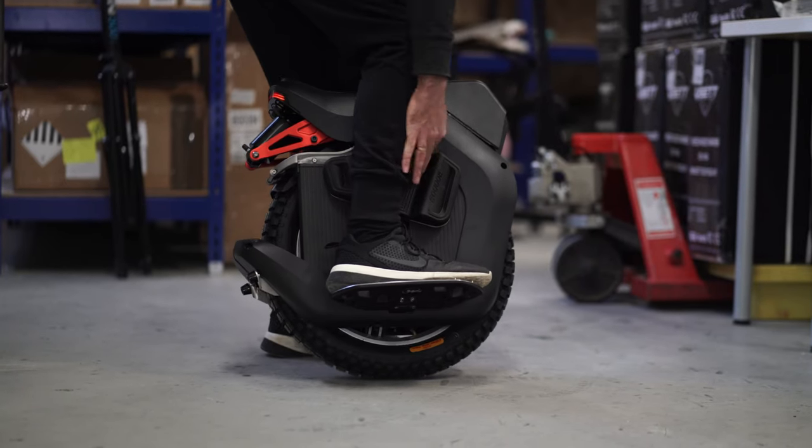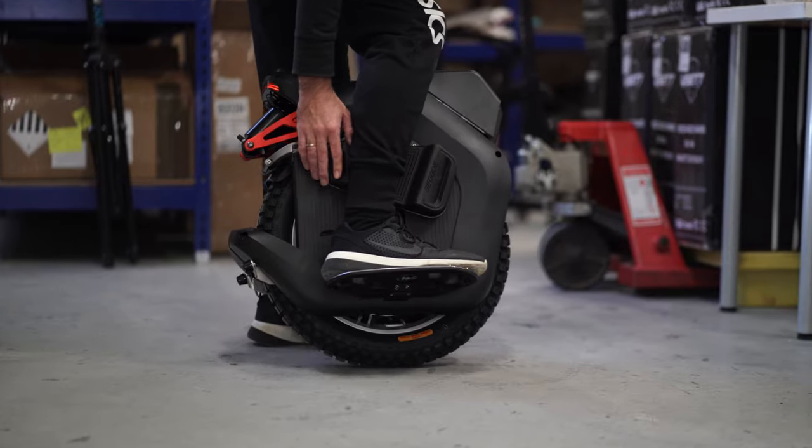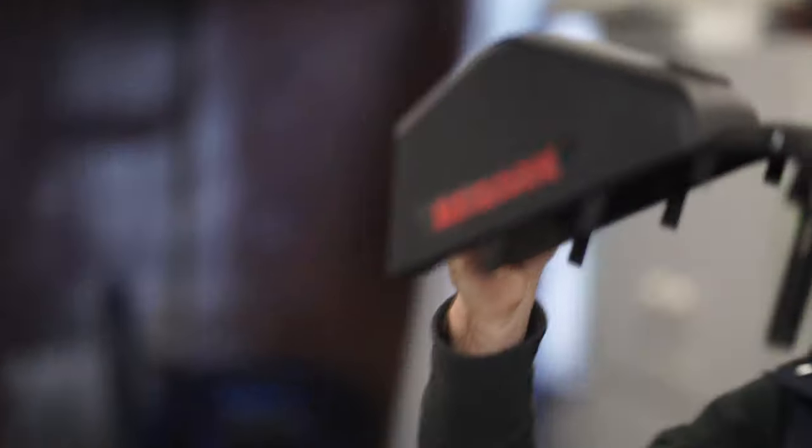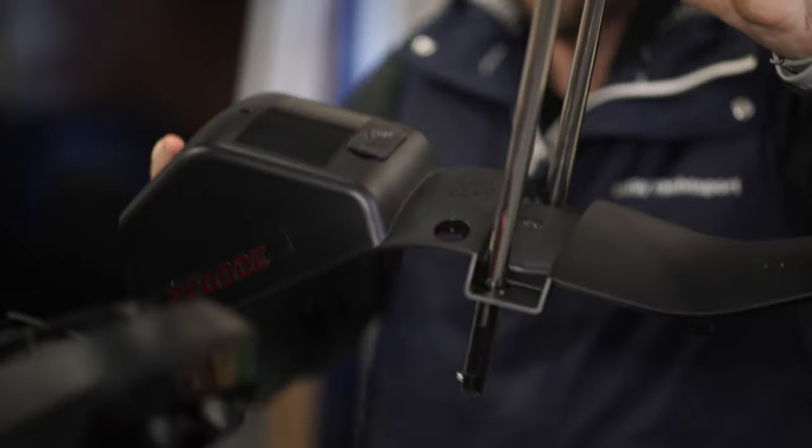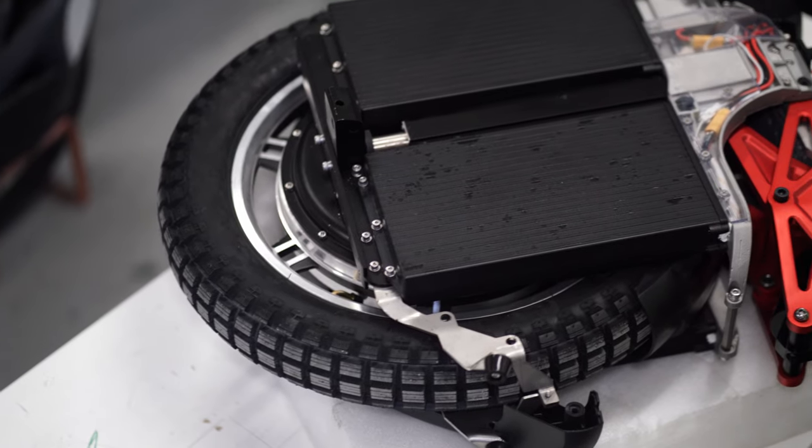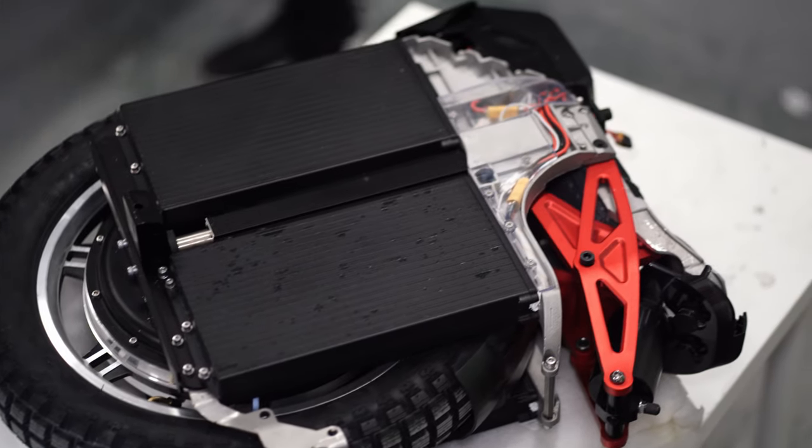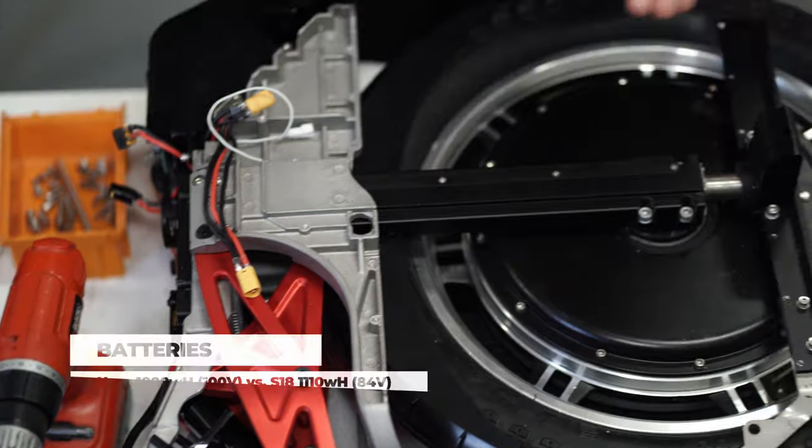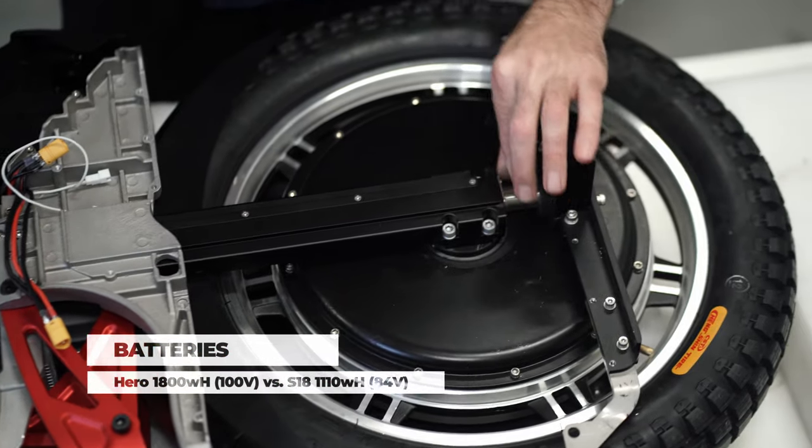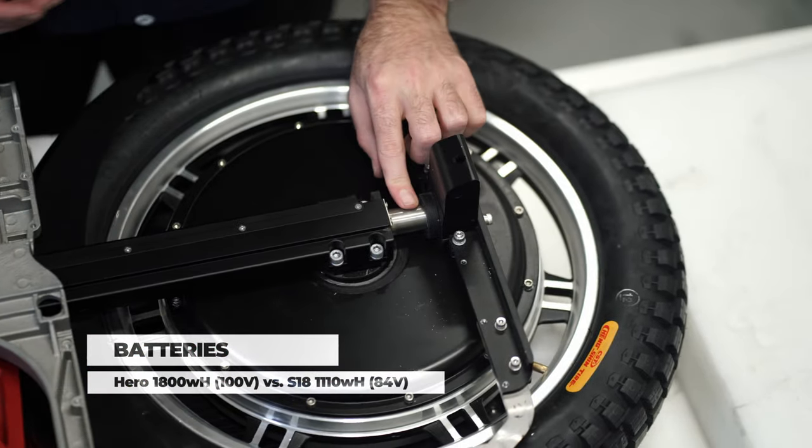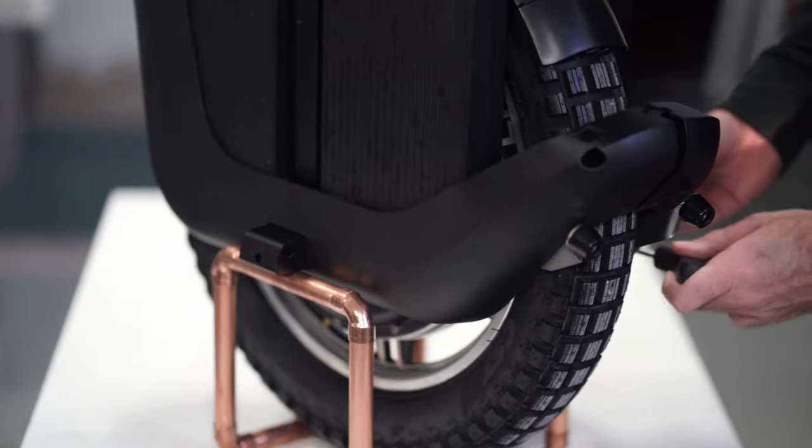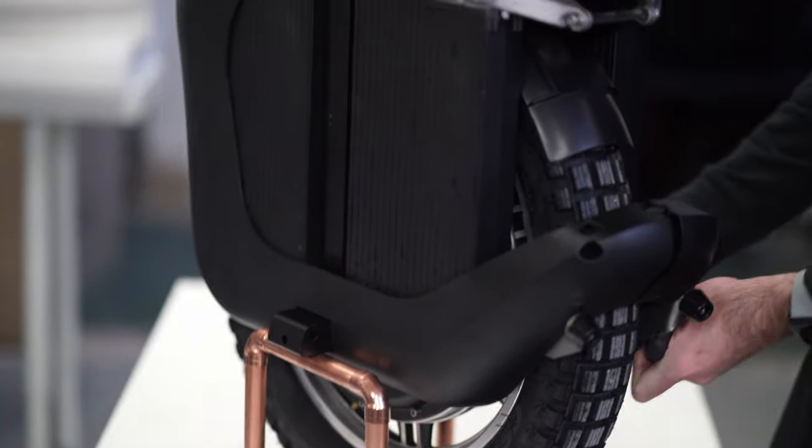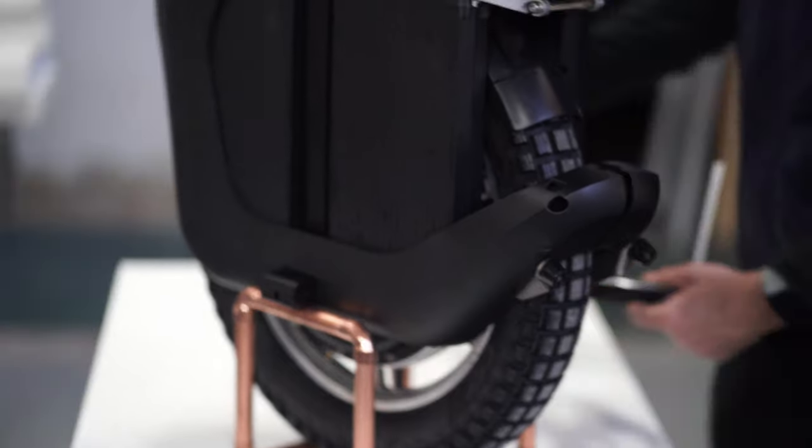The Begoad Hero is an attempt to jump on the outgoing hype train by copying the successful and already proven solutions of Kingsong, but using Begoat's strengths: power and large batteries. As a result, the company releases Begoad Hero in 100V version. Kingsong S18 has 84V, and with 1,800Wh batteries versus 1,110Wh from Kingsong.